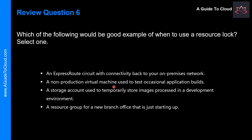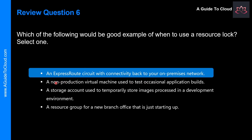A non-production virtual machine used to test occasional application builds — also not an ideal scenario for a resource lock, since it's non-production and only occasionally used for testing. So the correct answer is an ExpressRoute circuit with connectivity back to your on-premises network. Resource locks prevent another user in your organization from accidentally deleting or modifying critical resources. An ExpressRoute circuit is a critical resource in an organization.